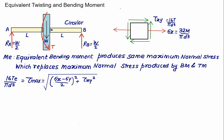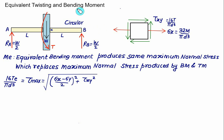The equivalent twisting moment provides a quick calculation for tau_max: 16·T/(π·D³), which equals the square root of [(sigma_x minus sigma_y)/2]² plus tau_xy² — the shear stress due to bending plus twisting. Similarly, we can calculate the maximum normal stress using the concept called equivalent bending moment. Me represents the equivalent bending moment, which produces the same maximum normal stress as is produced by the combination of bending moment M and twisting moment T.